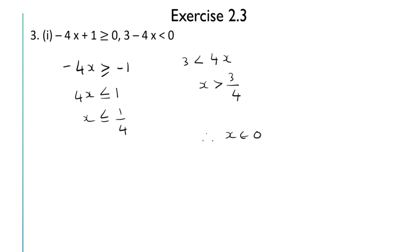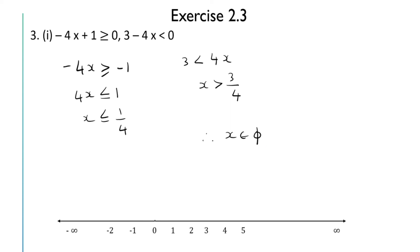On the number line, x ≤ 1/4 covers points to the left of 1/4, and x > 3/4 covers points to the right of 3/4. Since 1/4 < 3/4, there is a gap between these two regions and no points are common to both inequalities. So the solution set is the empty set.